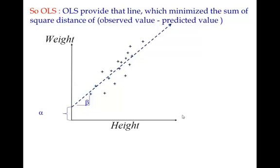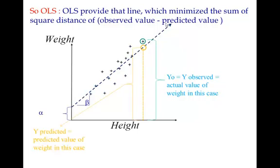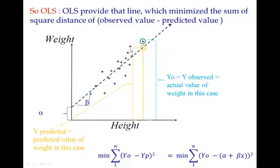OLS estimate is that particular line which minimizes the sum of squared errors. These are the observed points. For any given X, the point on the predicted line is the predicted value. The difference between the observed value and the predicted value is the error. We square it, sum it for all observations, and minimize this sum of squared errors. So OLS is that particular line which minimizes the sum of squared errors from the predicted line.